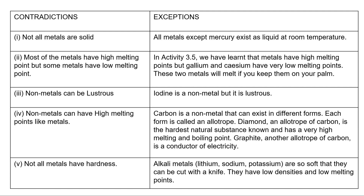Graphite, another allotrope of carbon, is a conductor of electricity — as we discussed earlier. The fifth and last contradiction is that not all metals have hardness. Alkali metals like lithium, sodium and potassium are so soft that they can be cut with a knife. So you can understand how nuanced this topic is — there are so many contradictions and exceptions. You must understand each and every property of metals and non-metals, and also memorize their contradictions and exceptions, as these are very important.